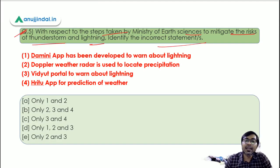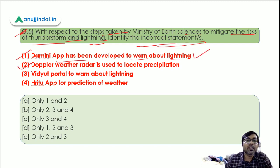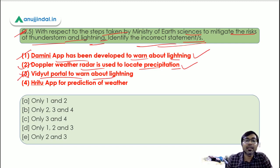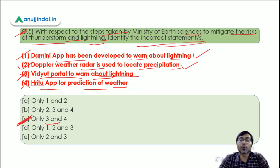The question asked to identify the incorrect statements about the steps taken by the Ministry of Earth Sciences to mitigate the risk of thunderstorm and lightning. Statement one - Damini app has been developed to warn about lightning - yes, correct. Statement two - Doppler weather radar is used to locate precipitation - yes, correct. Statements three and four about certain portals and apps appear to be incorrect. Therefore the correct answer is Option C - only statements 3 and 4 are incorrect.